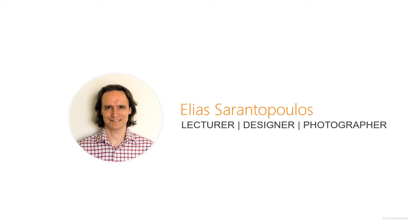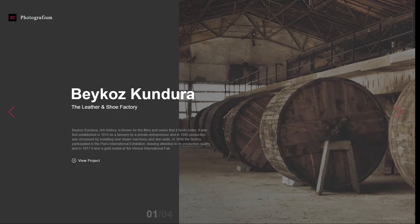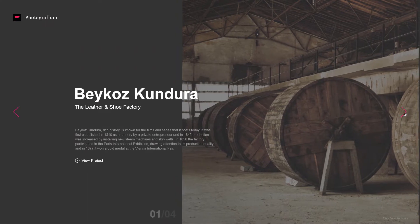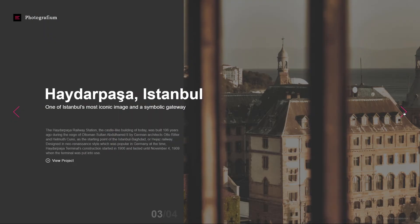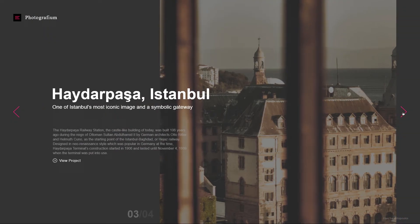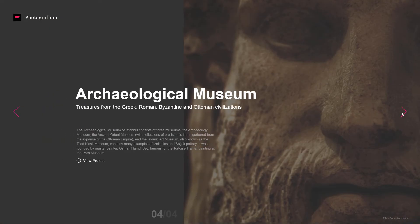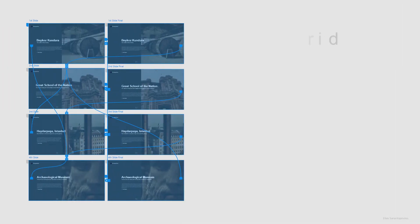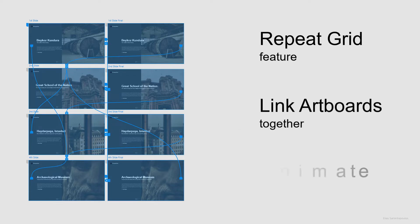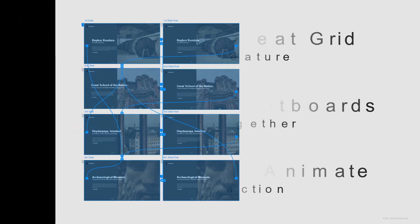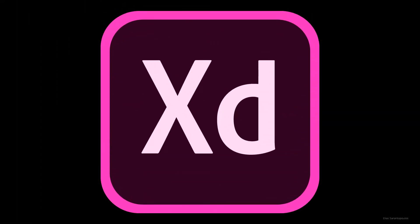Hello everyone and welcome back, I am your host Elias Sarantopoulos. In this Adobe XD tutorial we will explore how to animate website hero images using micro-interactions and time triggers to capture user's attention. We will use the Repeat Grid feature to create repeating elements, link artboards and use the Auto Animate action to transition in between.